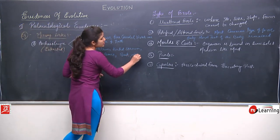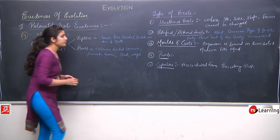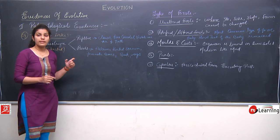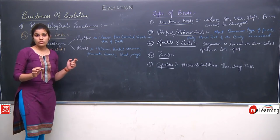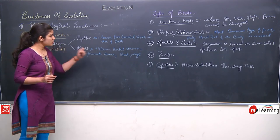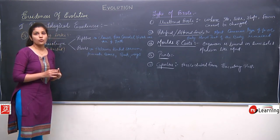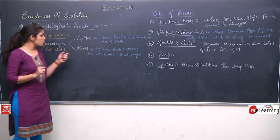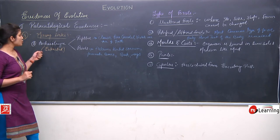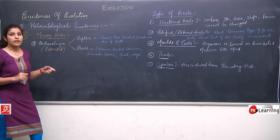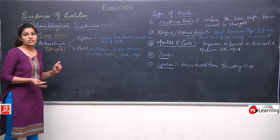Archaeopteryx had wings but could not fly — the wings were non-functional. It had teeth but could not chew. It had a beak for consuming food. All these characters confirm Archaeopteryx is the connecting link between reptiles and birds and shows evolutionary processes.